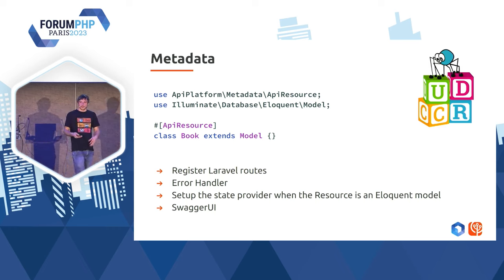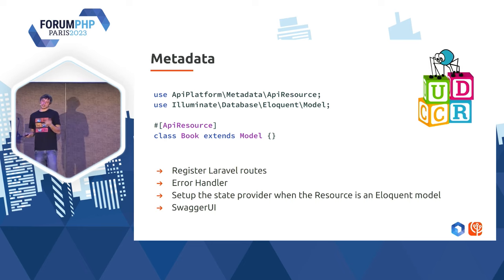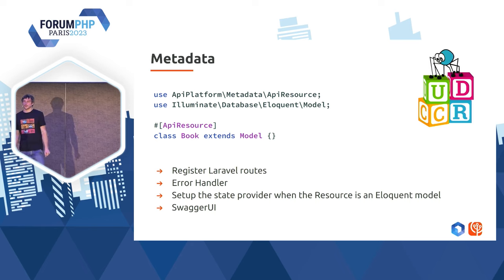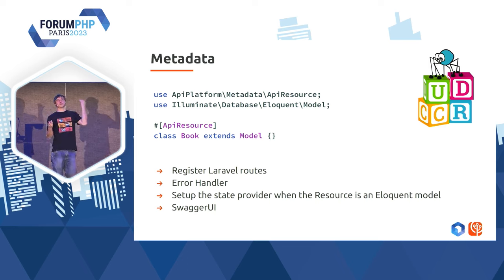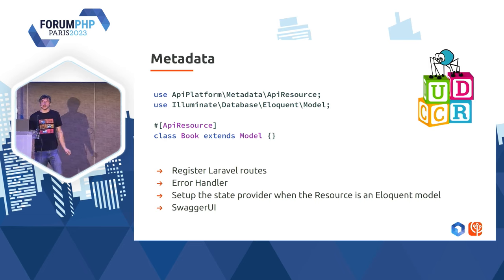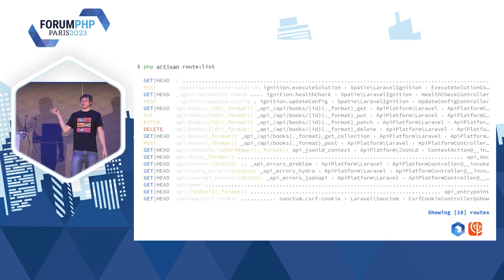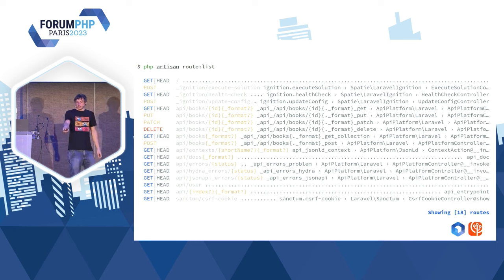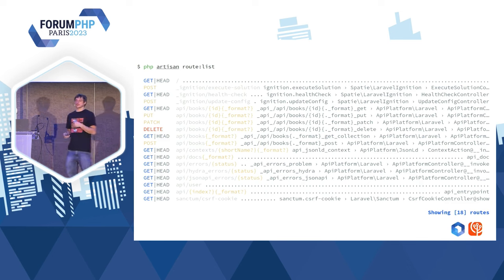Avec ce système de métadonnées, on doit enregistrer les routes dans Laravel. Il nous reste bien sûr le error handler — vous l'avez vu un petit peu au début. Et on peut détecter aussi si la ressource déclarée est un modèle Eloquent. Dans ce cas-là, on va automatiquement lui dire : si tu n'as pas encore déclaré de provider, récupère le provider automatique d'API Platform. En plus de ça, j'ai mis Swagger UI pour la démo de tout à l'heure — Swagger UI qui est bien appréciée pour visualiser une documentation OpenAPI. Et une fois qu'on a fait tout ça, `php artisan route:list` — Artisan, c'est un peu comme dans le monde Symfony le binaire Symfony — on voit la liste des routes déclarées automatiquement, ainsi que d'autres routes : Context, Docs, Errors, pour les systèmes internes d'API Platform et l'autodiscoverabilité de votre API.